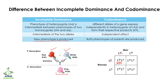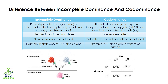The example of incomplete dominance is the pink flowers of the four o'clock plant. The four o'clock flower — when red and white are crossed with each other — in the F1 generation produces a pink phenotype, which is intermediate between red and white.